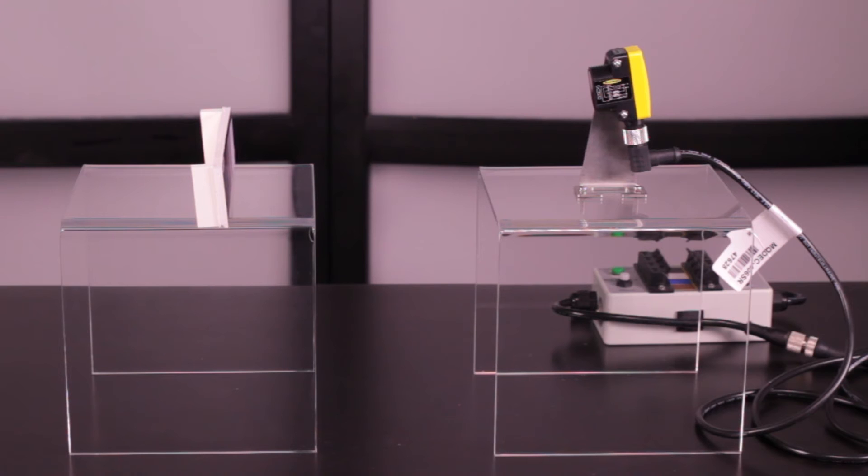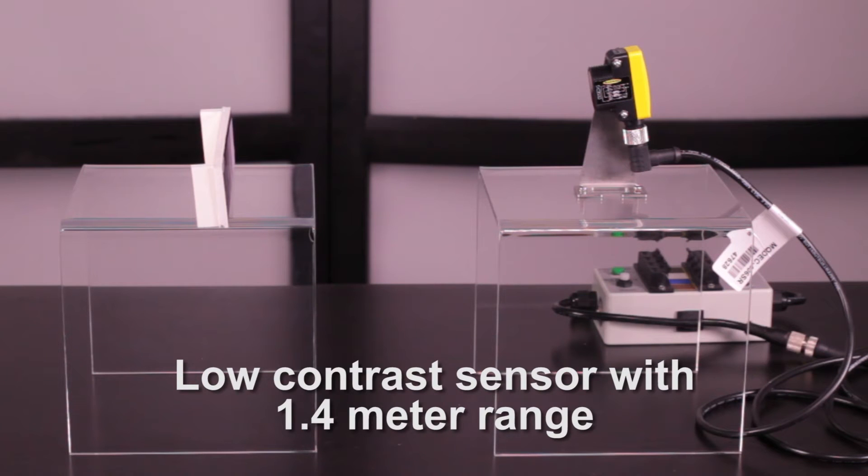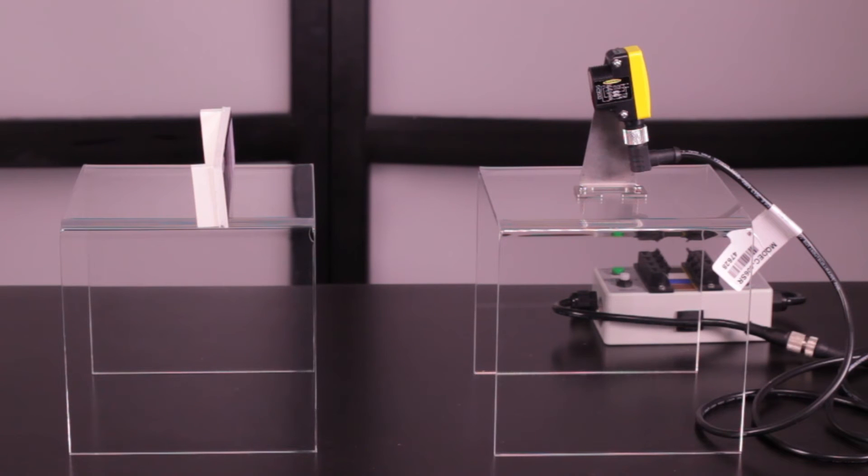This video will show how to set up the QS30 EDV Low Contrast Sensor, which is designed to detect targets out to 1.4 meters and to operate down to 300 microseconds.